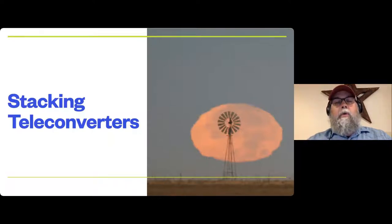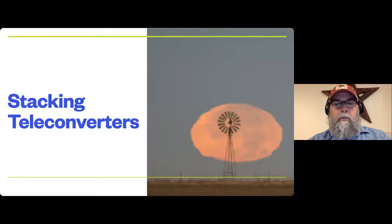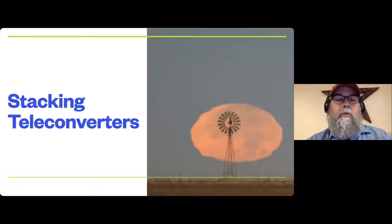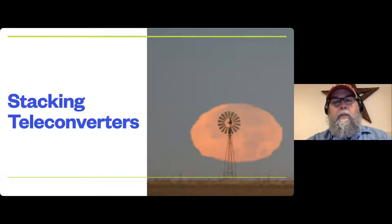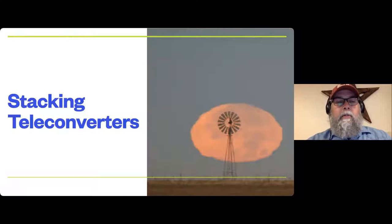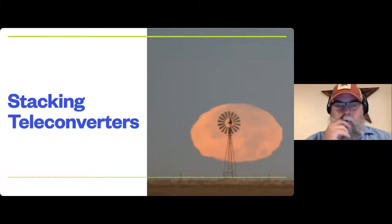What I like using stacked teleconverters for is scenes like a moon rise or moon set — you can get strikingly unusual images of the moon appearing very large in the frame. On this picture, all I did was stack teleconverters and shot the moon against a windmill up in the Texas panhandle. The way the moon looks squashed is diffraction from traveling through all the air. To make it appear that big, I was shooting at 1,400 millimeters. Canon teleconverters require a 12-millimeter extension tube between them when stacking because they have an element that sticks out.